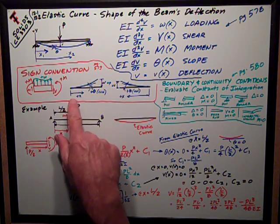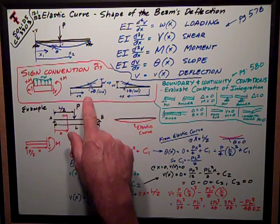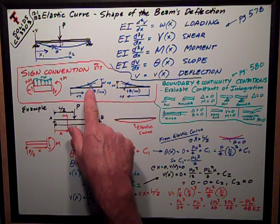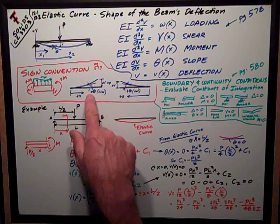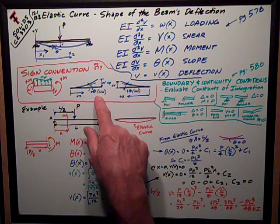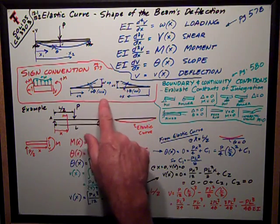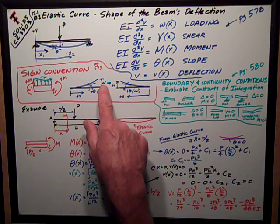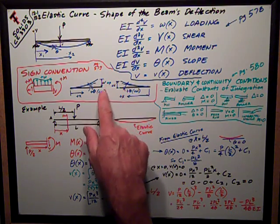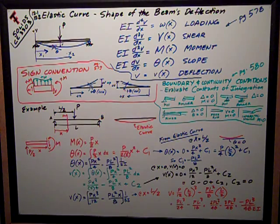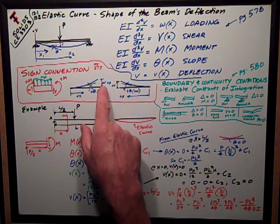Okay, the sign conventions that we want to add are, if we measure x positive from the left end of the beam, then the slope theta is considered positive if it goes counterclockwise. And the deflection, lowercase v, is positive up. So a deflection down is considered negative.